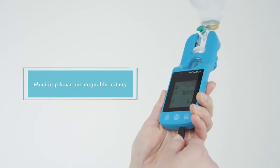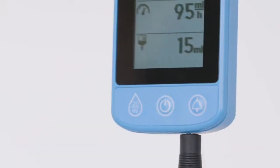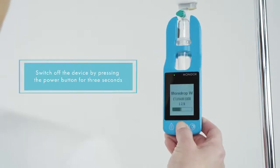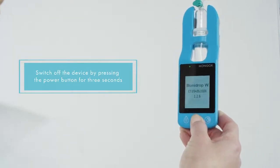MoniDrop has a rechargeable battery, and this can also be used at the time of charging. Switch off the device by pressing the power button for three seconds.